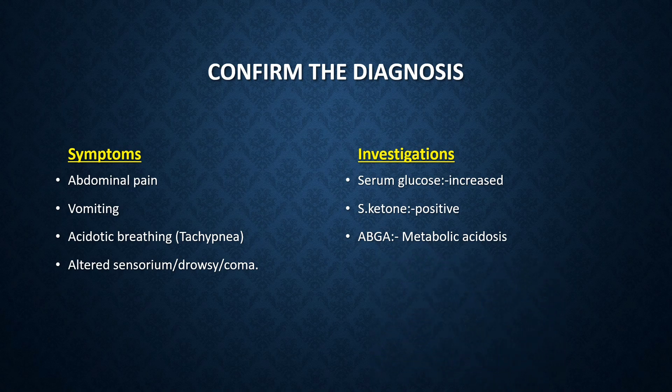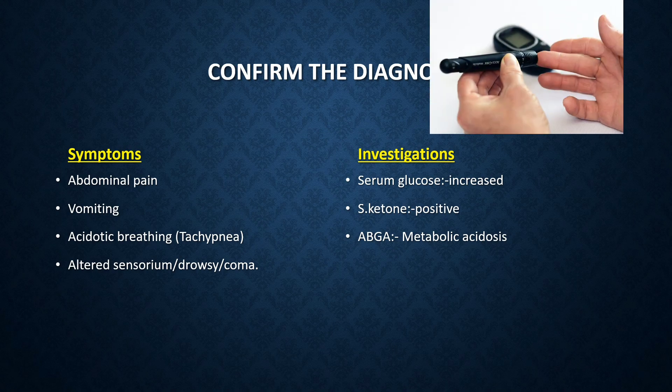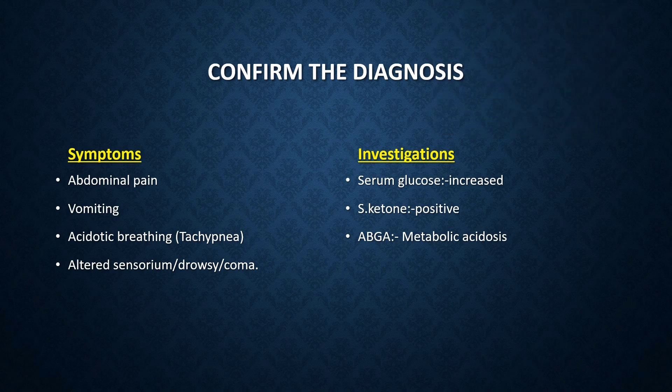The initial investigations required to diagnose a case of DKA are high serum glucose level, positive serum ketones, and metabolic acidosis on the arterial blood gas analysis report.